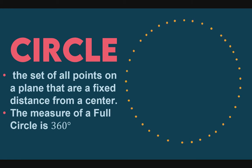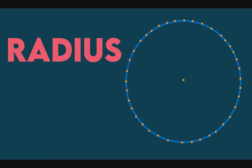So first, let us define circle. Circle is not just a shape. Circle is the set of all points on a plane that are a fixed distance from a center, just like this one. So we have here a center, and each point on this plane has equal distance from this point. So the measure of a full circle is 360 degrees.